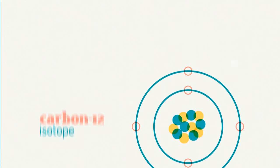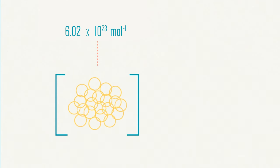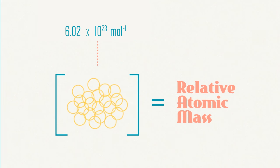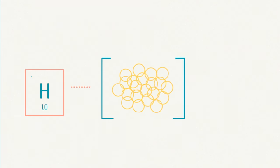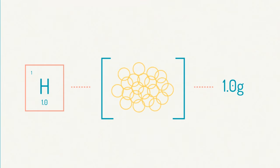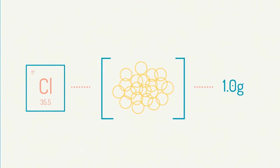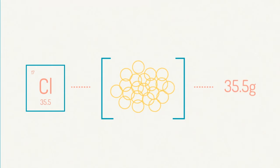For atoms, the mass of Avogadro's number of particles is equal to their relative atomic mass in grams. So, the mass of Avogadro's number of hydrogen atoms is 1 gram, and the mass of Avogadro's number of chlorine atoms is 35.5 grams.